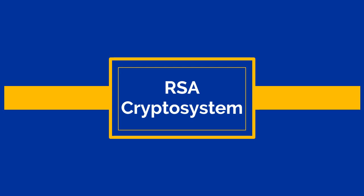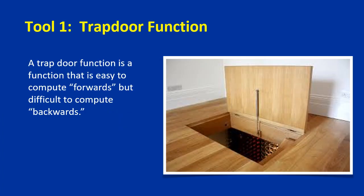Let's now see how the RSA cryptosystem works. RSA is the encryption-decryption system we use nowadays. The first thing we need is a trapdoor function — a function that is easy to compute forwards but difficult to compute backwards, because we don't want people who send us a message to have difficulty encrypting it.